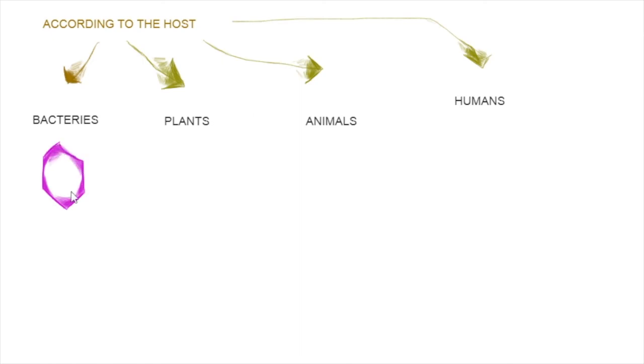Or according to their hosts, that is the kind of living creatures that they can infect. These ones, the complex ones, can only infect bacteria. While the ones that look like a cylinder and have no cover only infect plants. Other viruses like the flu that look like one of these only infect animals or humans.